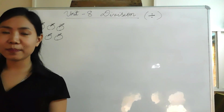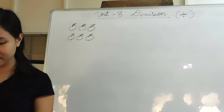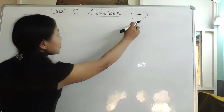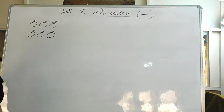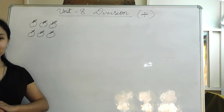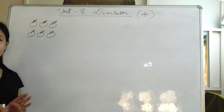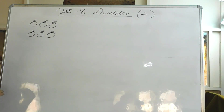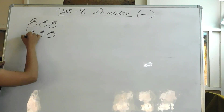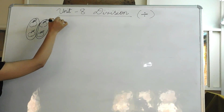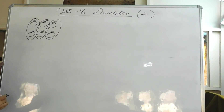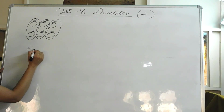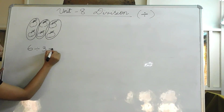Division is all about sharing into equal parts. The symbol for division is read as 'divided by.' Suppose you have 3 friends and you also have 6 apples. How will you share them equally among your 3 friends? Each of your friends will get 2 apples each. In this case we can write 6 divided by 3 is equal to 2.